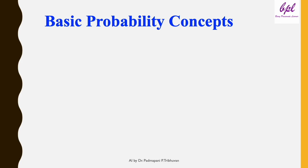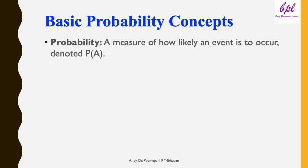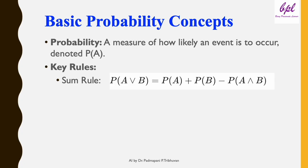Now let's refresh some basic probability concepts that form the backbone of probabilistic reasoning. Probability is a measure of how likely an event is to occur, denoted by P(E). One key rule is the sum rule, which helps us calculate the probability of at least one event happening. It is written as: P(A or B) = P(A) + P(B) − P(A and B).